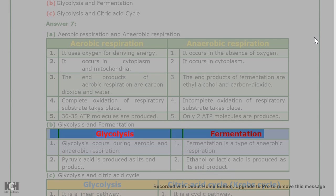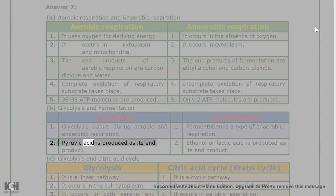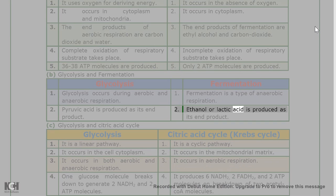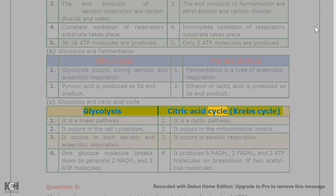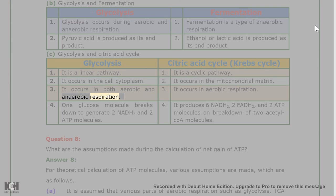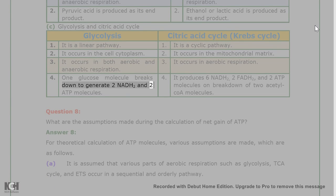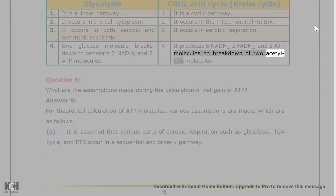Answer 7(b): Glycolysis vs Fermentation. Glycolysis occurs during both aerobic and anaerobic respiration; fermentation is a type of anaerobic respiration. Pyruvic acid is produced as the end product of glycolysis; ethanol or lactic acid is produced as the end product of fermentation. Answer 7(c): Glycolysis vs Citric acid cycle. Glycolysis is a linear pathway occurring in the cell cytoplasm; the citric acid cycle is a cyclic pathway occurring in the mitochondrial matrix. Glycolysis operates in both aerobic and anaerobic conditions; the citric acid cycle occurs only in aerobic respiration. Glycolysis generates 2 NADH₂ and 2 ATP from one glucose; the citric acid cycle produces 6 NADH₂, 2 FADH₂, and 2 ATP from two acetyl-CoA molecules.